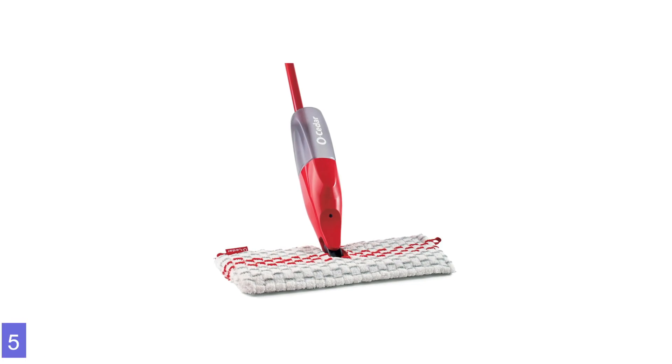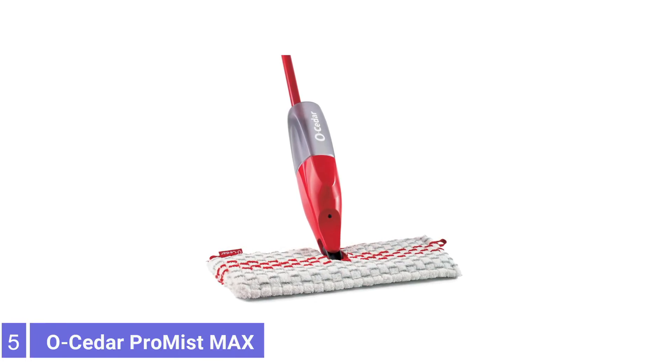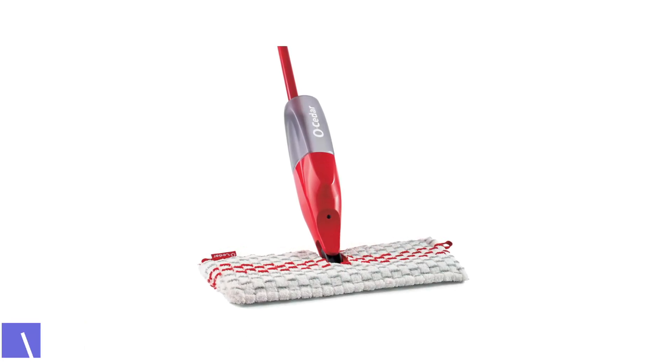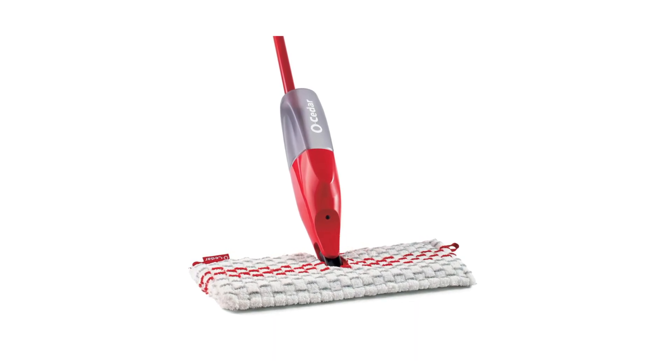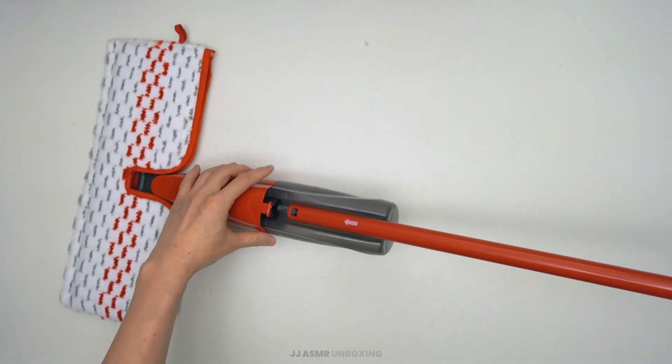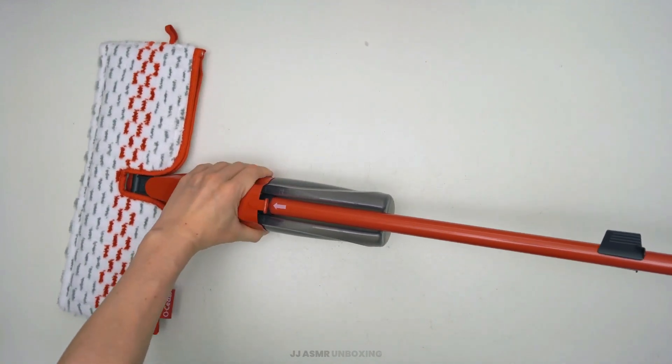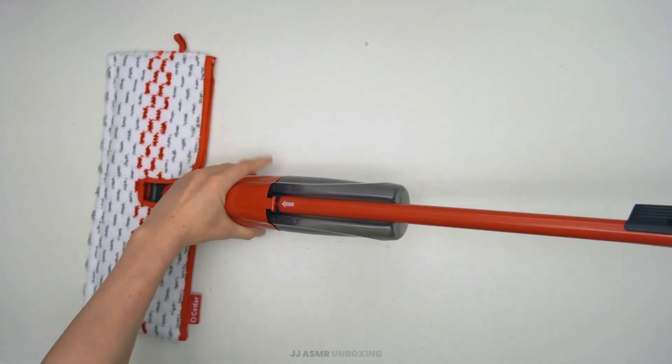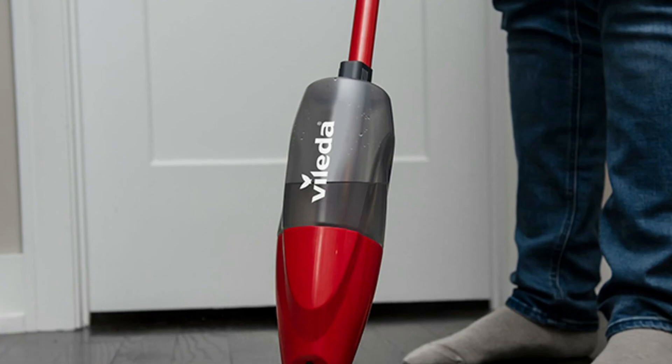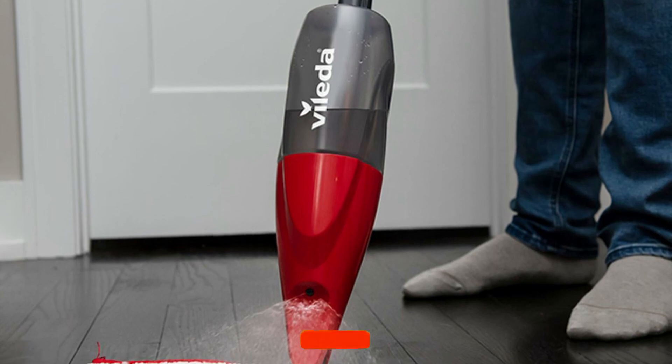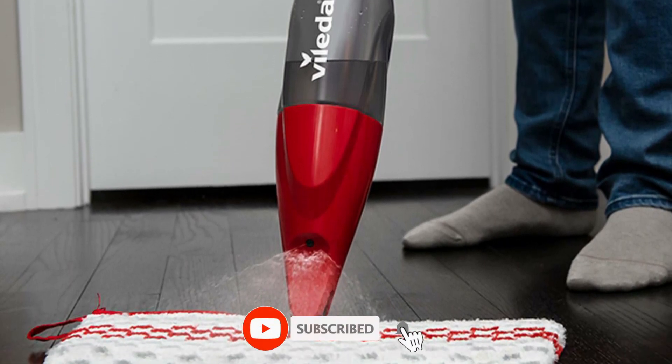Number 5. O-Cedar Pro Mist Max Microfiber Spray Mop. A dirty mop can spread germs and grime rather than clean the floor. The O-Cedar Pro Mist Max Mop features a dual-sided microfiber mop pad. When one side is dirty, swing the mop head by its 180-degree swivel to the other for a fresh cleaning surface. This convenient design offers double the cleaning surface in one mop pad.